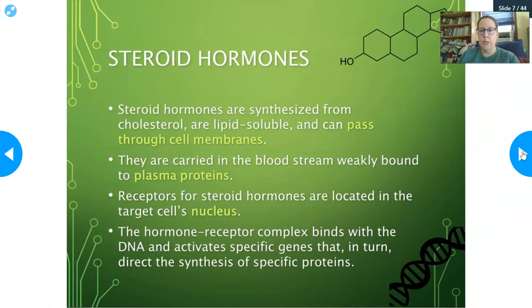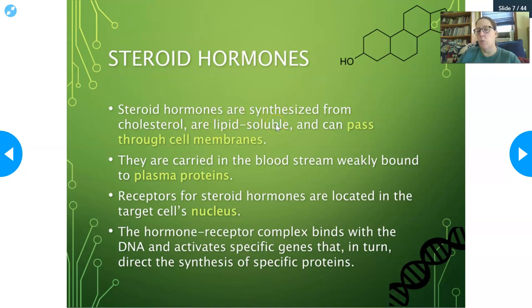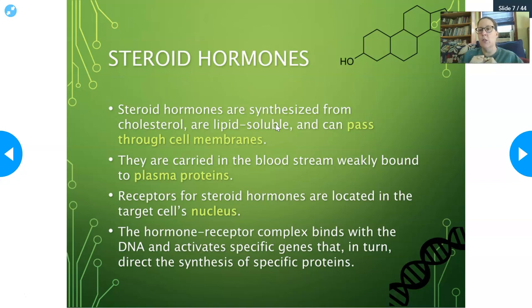Steroid hormones are made from cholesterol, and cholesterol is named for its sterol ring. Because they're built from cholesterol — which is a fat — they're lipid-soluble and not water-soluble. This gives them certain characteristics: they can pass through cell membranes. Cell membranes are lipid-based, so lipid and lipid just meld through — the steroid hormones can just pass through the cell wall and enter the cell, just like if someone could pass through walls.